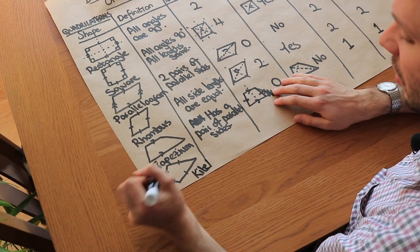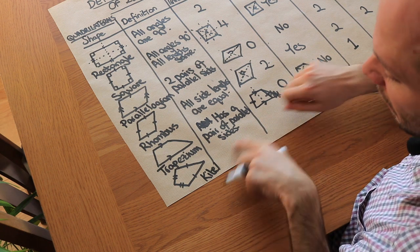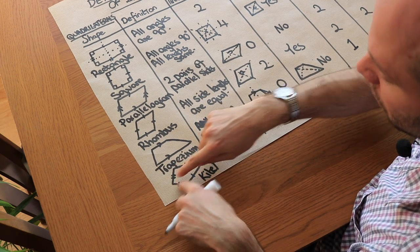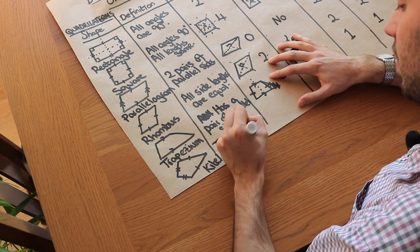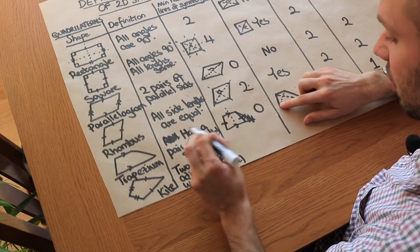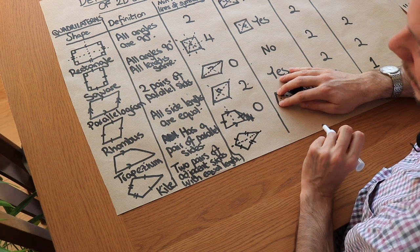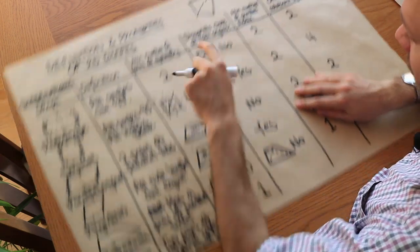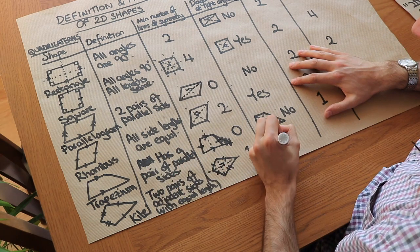A kite looks like a kite. Its definition is that it has two pairs of adjacent sides of equal length — adjacent meaning next to each other. It has at least one line of symmetry along the main diagonal, but not along the other diagonal. The diagonals do cross at right angles, as you can see the right angle where they meet.